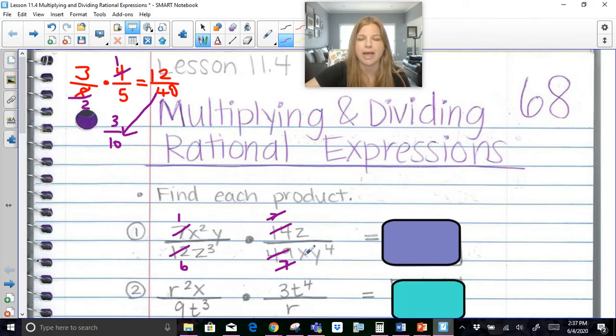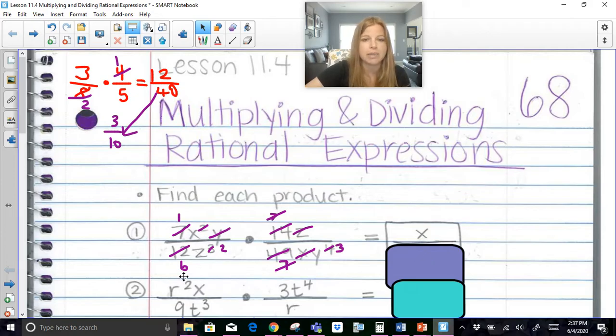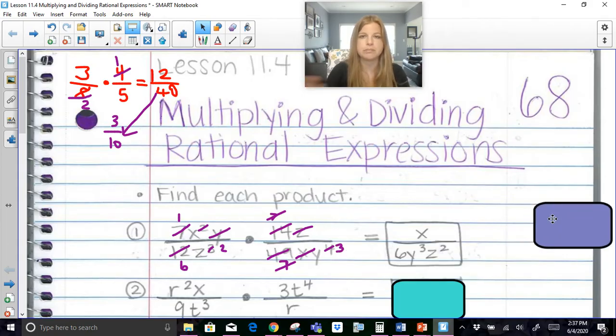Now not only can you cross simplify but don't forget you can simplify within the fraction. So 1 over 6 is fine. But 7 over 7 those are actually just going to be gone completely. Now x squared and then x. So I can take an x away in the denominator and take one of those x's away in the numerator. I've got y over y to the fourth, so this is going to become y to the third in the denominator. If I cross out a z on top this is going to become z to the second in the denominator. Technically all I have left in my numerators is 1 times x which is just x. My denominator I'm left with 6, z to the second, and then y to the third. And that's my final expression.